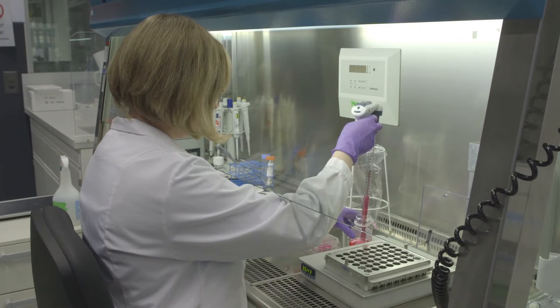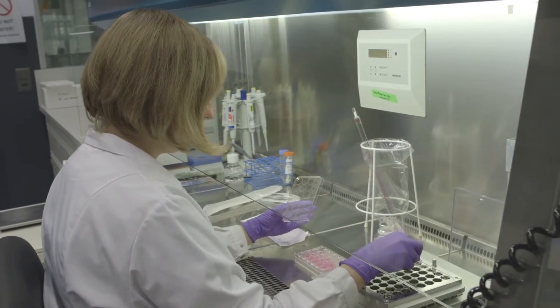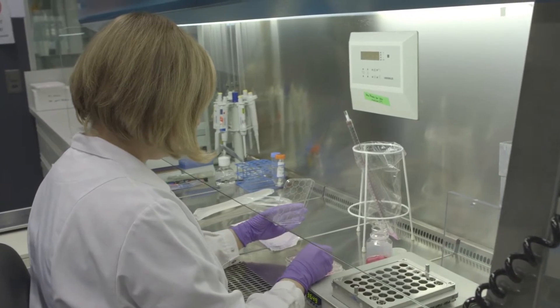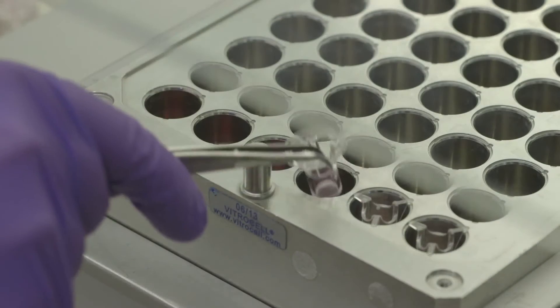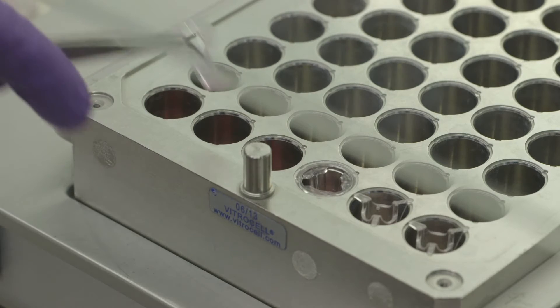Firstly, the scientist prepares the cells on little plastic structures called inserts. These inserts allow the cells to be grown in a physiologically relevant way, where the bottom of the cells are exposed to liquid and the top of the cells are exposed to air.